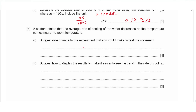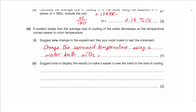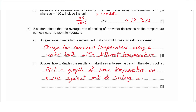Part d says a student states that the average rate of cooling decreases as the temperature approaches room temperature. Suggest one change to test this: we can change the surrounding temperature using a water bath at different temperatures, or use an air conditioner to alter room temperature, testing whether room temperature affects the rate of cooling. To display results and see the trend, plot a graph of room temperature on the x-axis against rate of cooling on the y-axis.